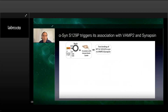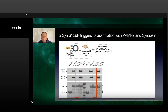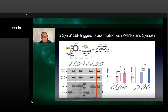To evaluate the interaction in a more native context, we purified GST fusion proteins containing wild-type synuclein and the two mutants — the phosphomimetic and the phospho-dead — then incubated them with mouse brain lysates and asked whether native VAMP2 and native synapsin could bind these proteins. We found that blocking phosphorylation of alpha-synuclein completely disrupts the interaction with VAMP2 and synapsin, whereas the phosphomimetic mutant shows enhanced binding, suggesting that phosphorylation triggers the association with VAMP2 and synapsin.